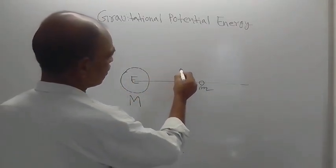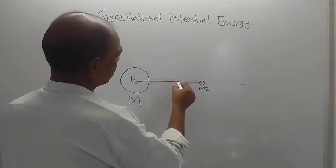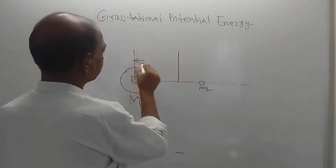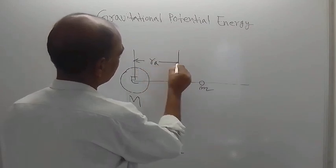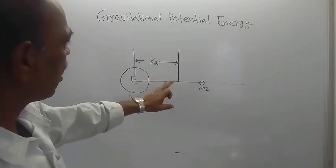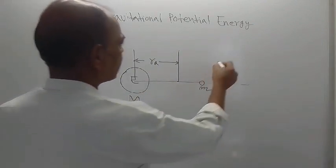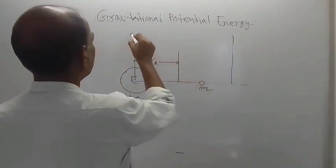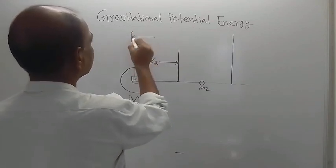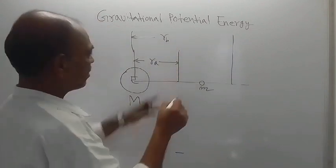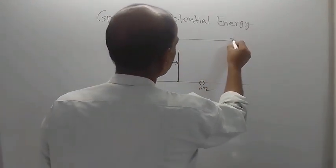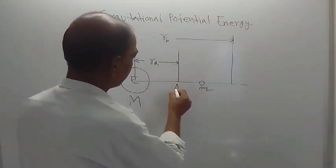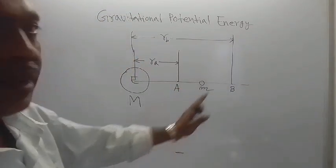Now suppose, let us take this point. This point is at a distance of Ra from the center of the Earth — location Ra. This is one point. And let us take another point somewhere here, at a distance of Rb. A and B are suffixes. So this point is denoted by A and this point is denoted by B, capital A and capital B.